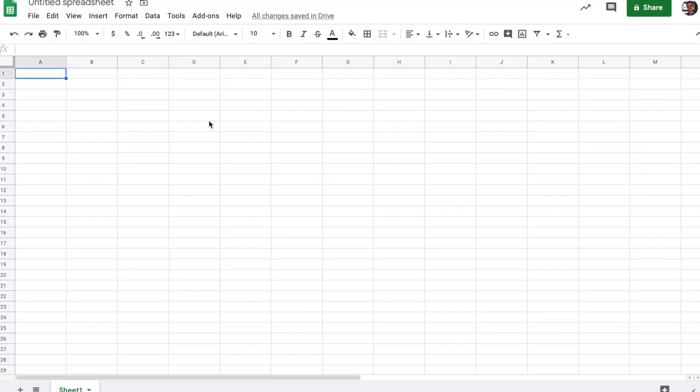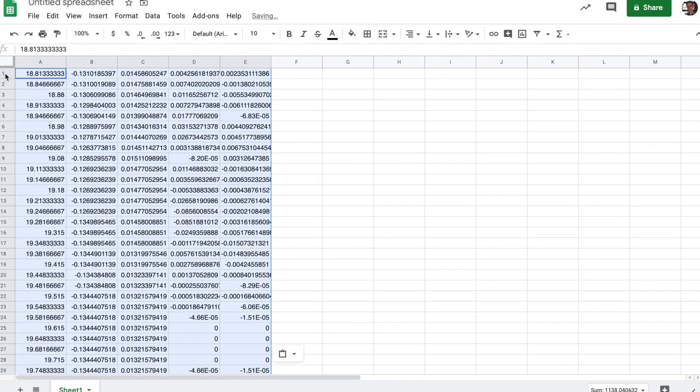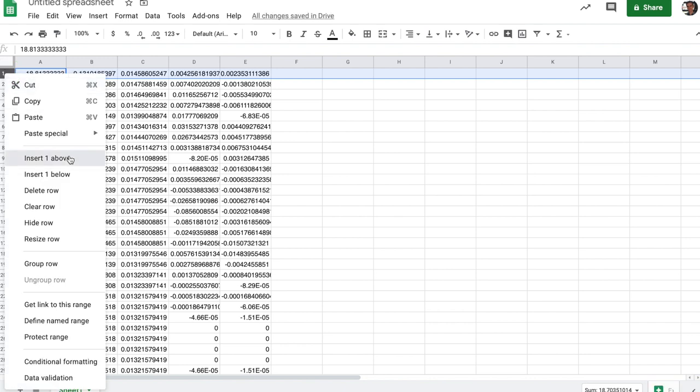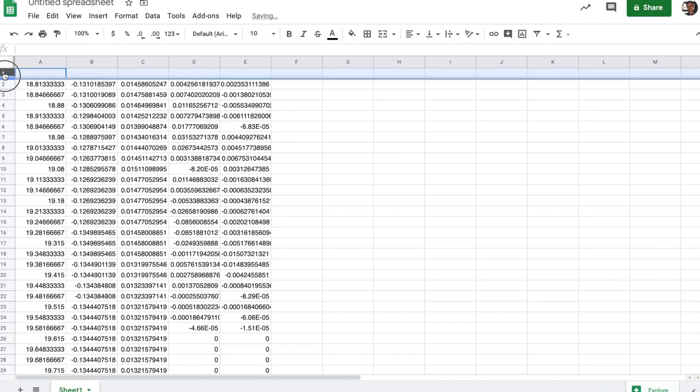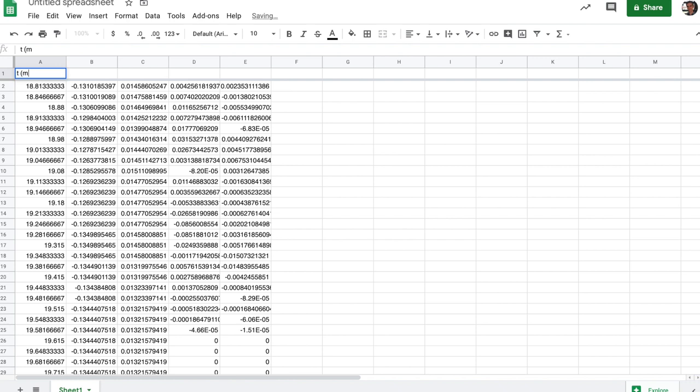We can now go ahead and paste our data into a spreadsheet program. I'm going to go ahead and insert a header row. So this is the time in the movie in seconds, the x position in meters, the y position in meters, the x velocity in meters per second, and the y velocity in meters per second.